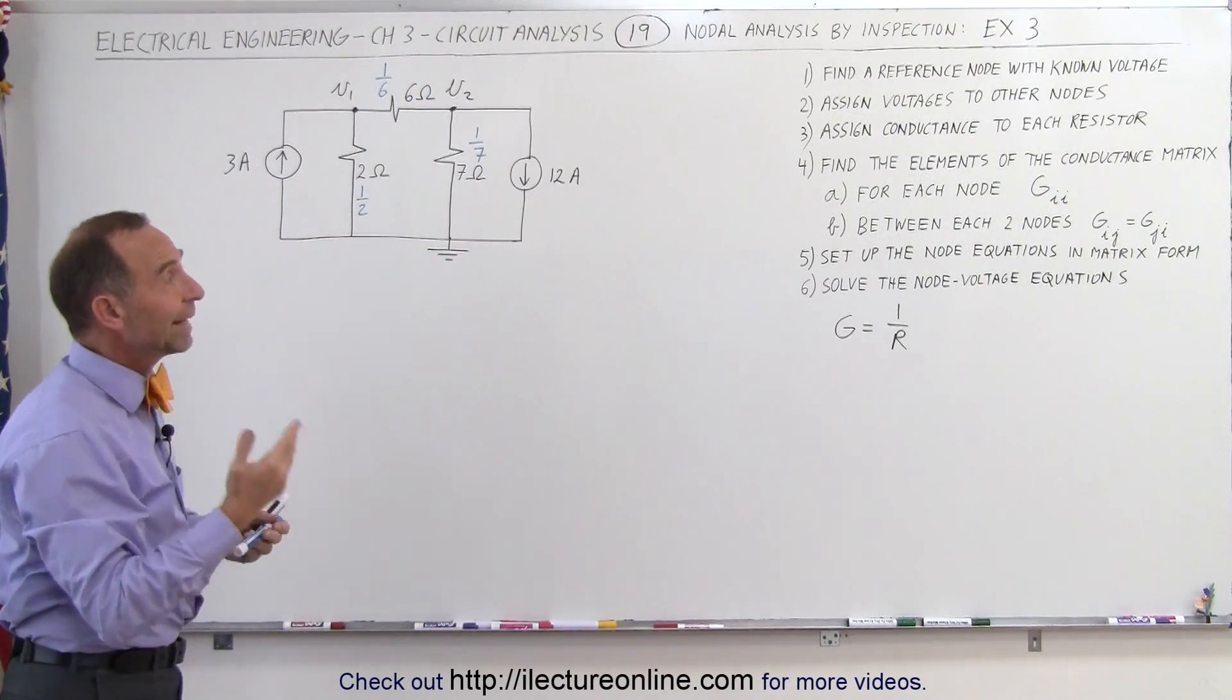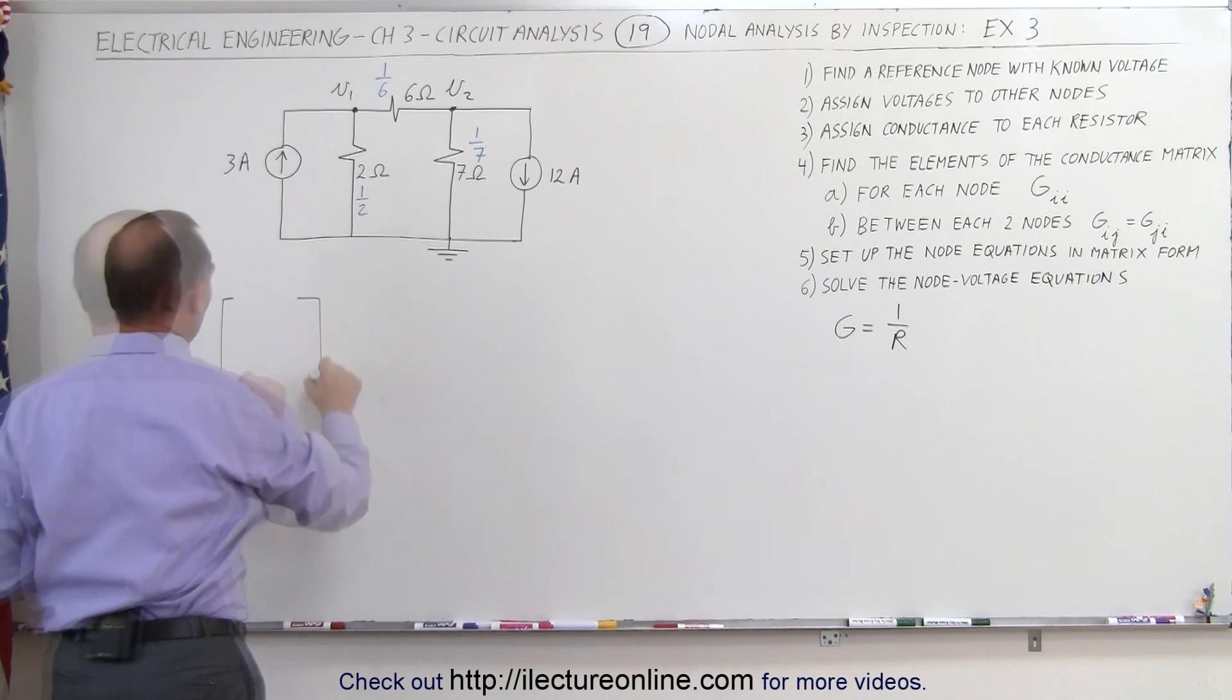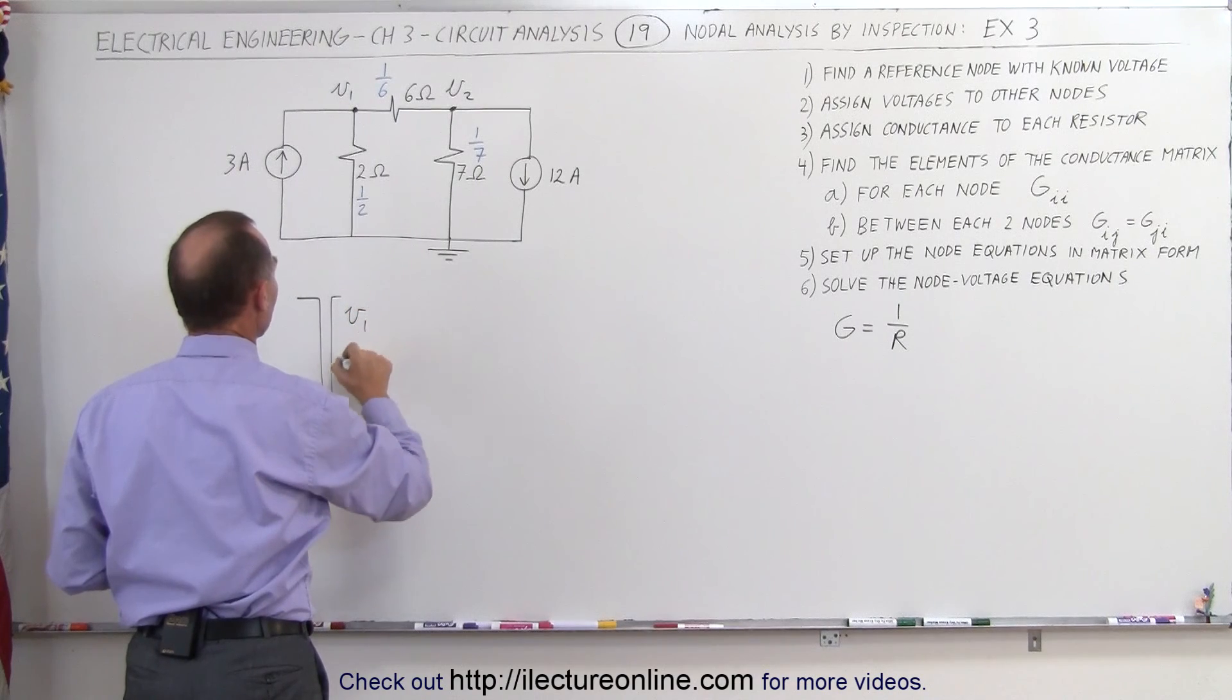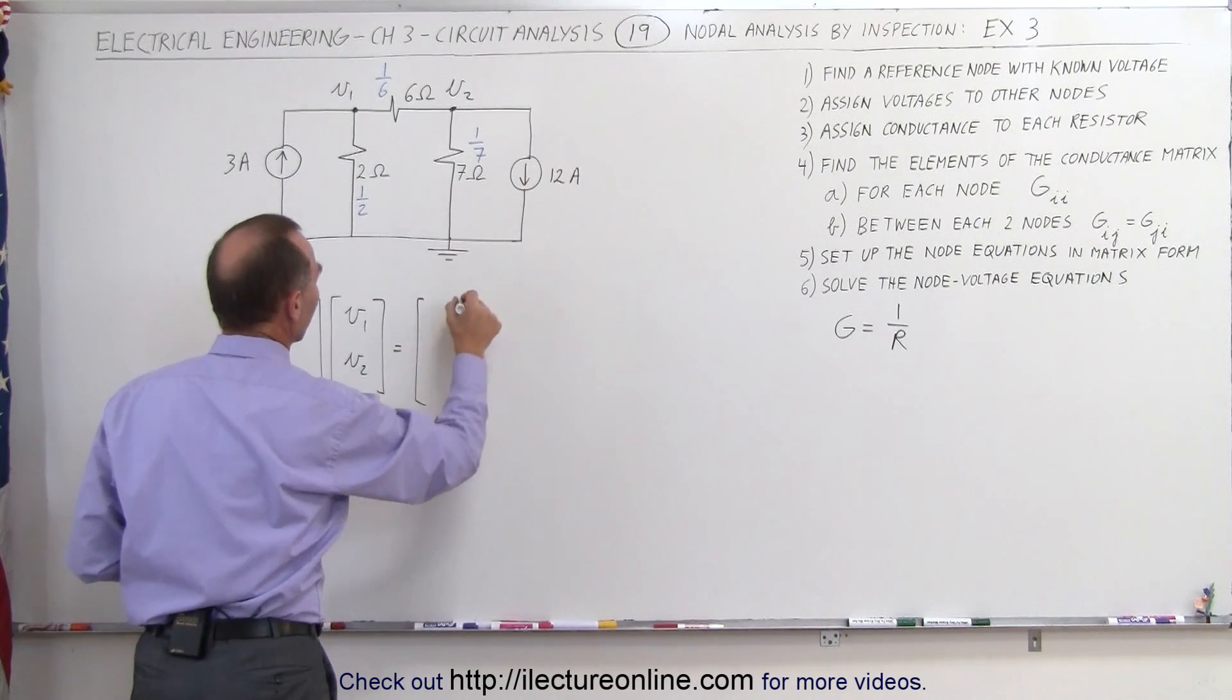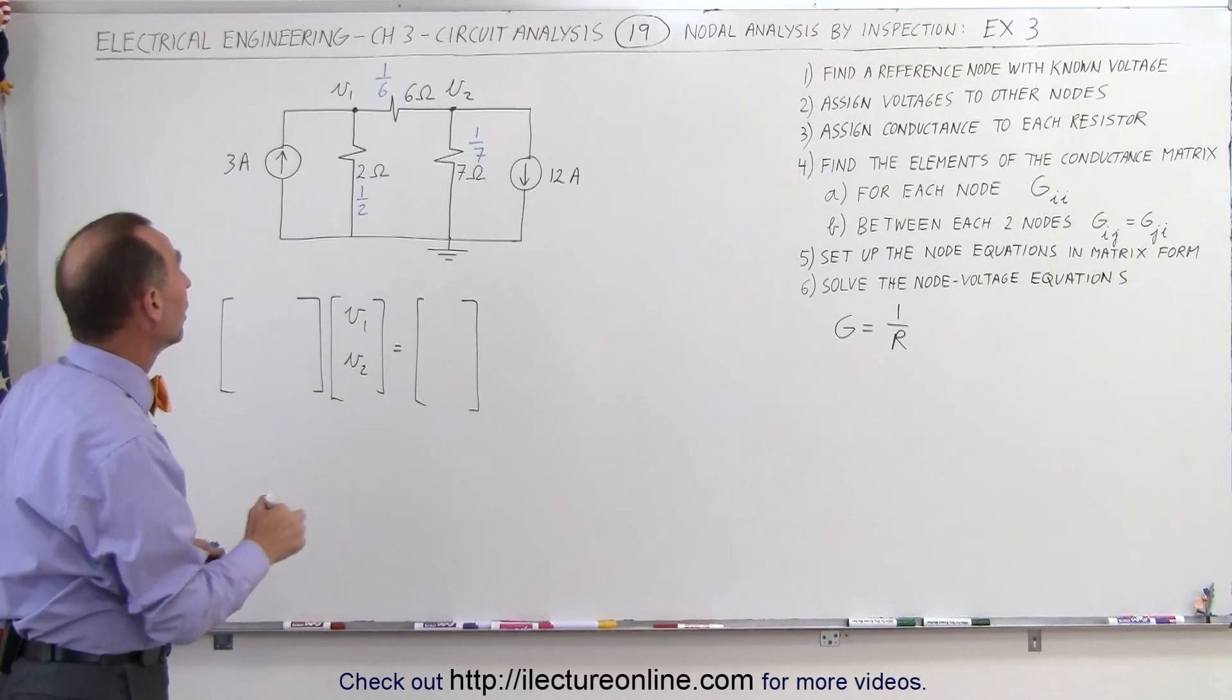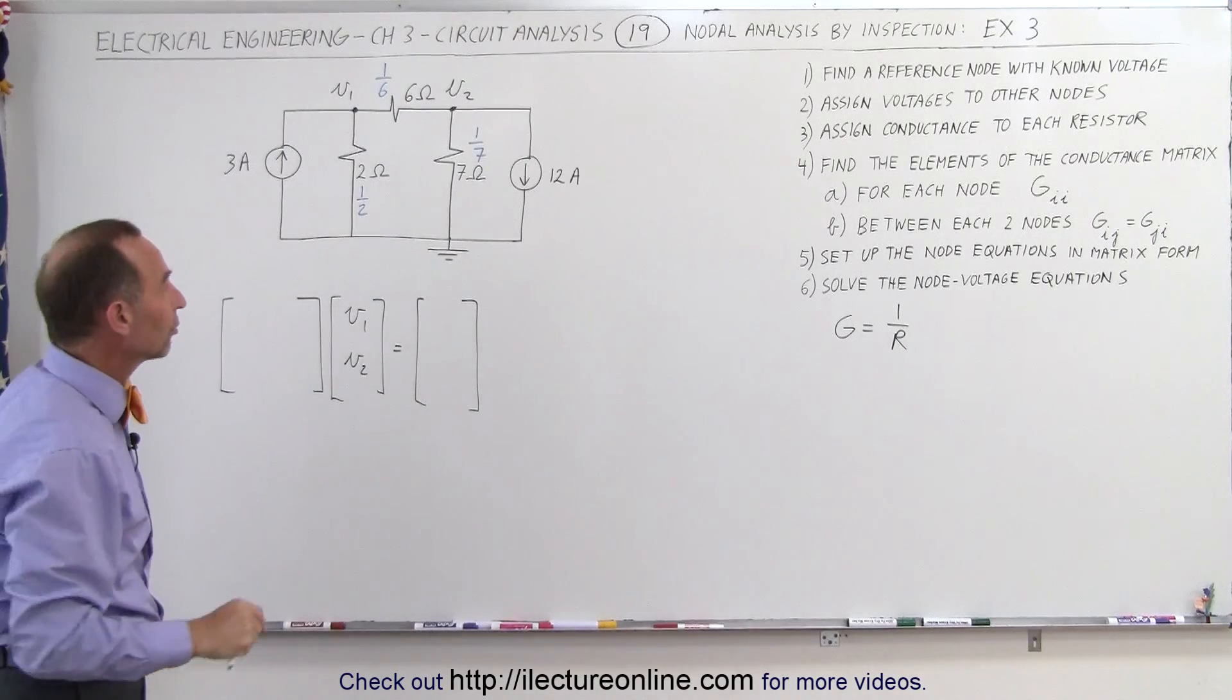The next thing we do is we try to find the elements of the conductance matrix so that we can find the voltages. Here's our conductance matrix, we need to find the cross elements or the diagonal elements, we multiply that times the unknown matrix V1 and V2, and that must then equal the current matrix. Remember that these are the sums of the currents entering and leaving the nodes V1 and V2 based on only the current sources, we do not take into account the current in any of the other branches.